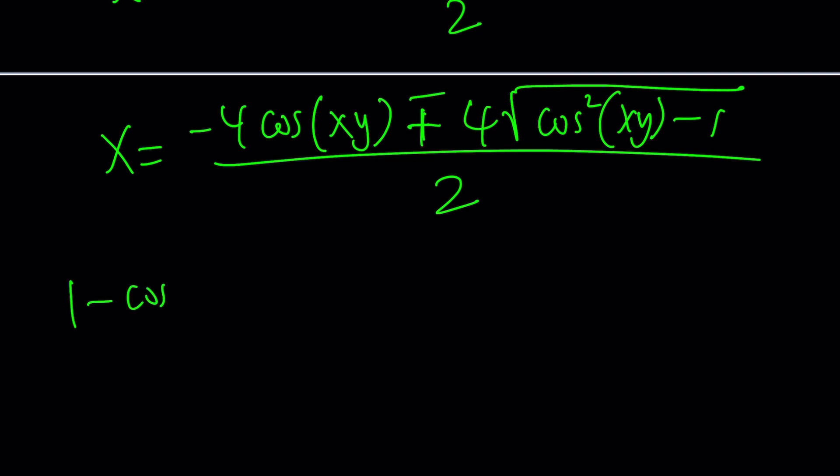We probably know that 1 minus cosine squared is sine squared. So cosine squared minus 1 is the opposite, which is negative sine squared. And when you have a sine squared, it can't be negative. Negative sine squared cannot be positive. So when you square root it, what is the square root of sine squared alpha? It's sine plus minus.